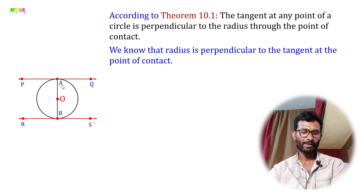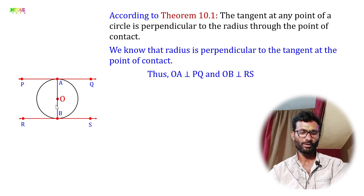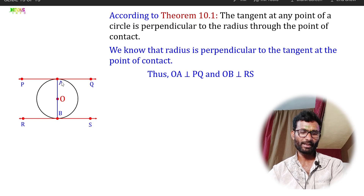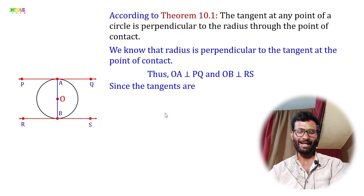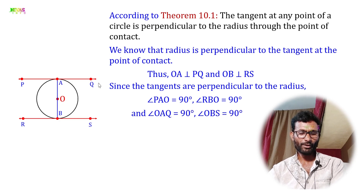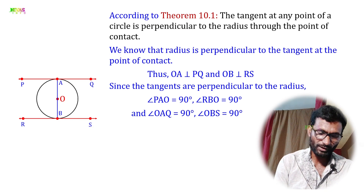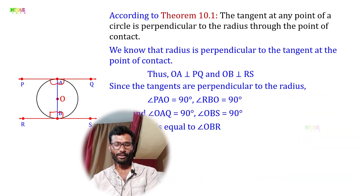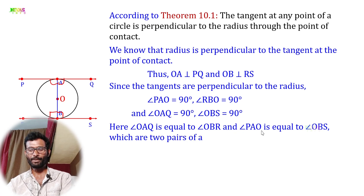According to Theorem 10.1, we have angle OAQ = 90 degrees and angle OBR = 90 degrees. Also angle OAP = 90 degrees and angle OBS = 90 degrees. These are two pairs of alternate interior angles, both equal to 90 degrees.